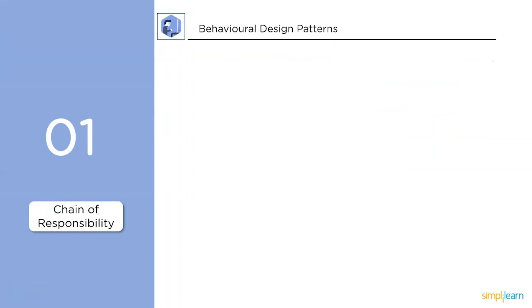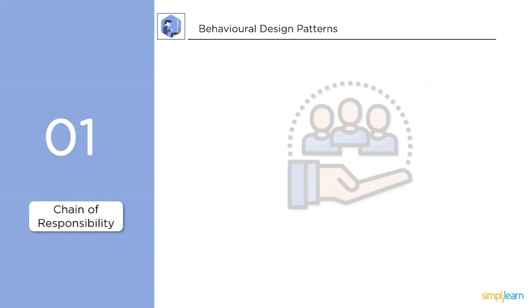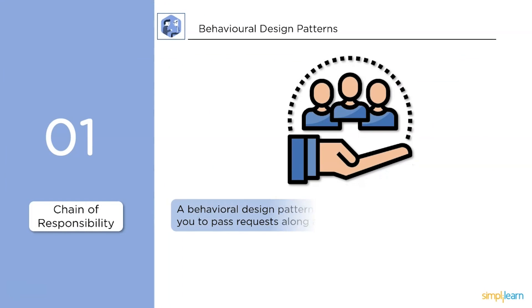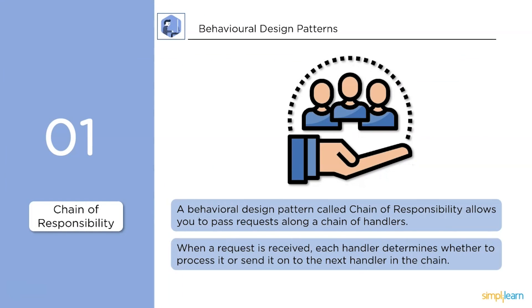First up, Chain of Responsibility. A behavioral design pattern called Chain of Responsibility allows you to pass requests along a chain of handlers. When a request is received, each handler determines whether to process it or send it to the next handler in the chain.